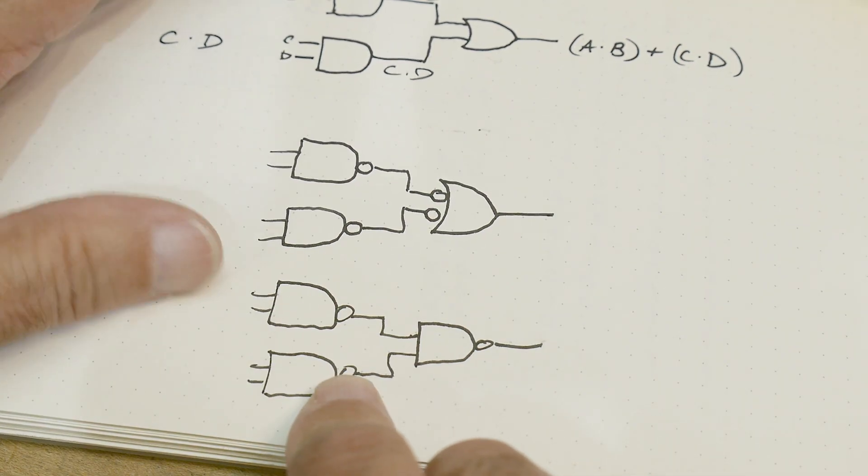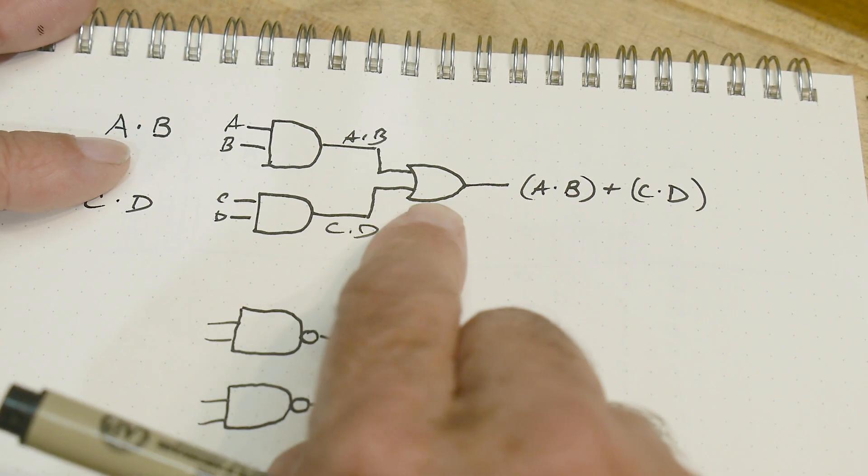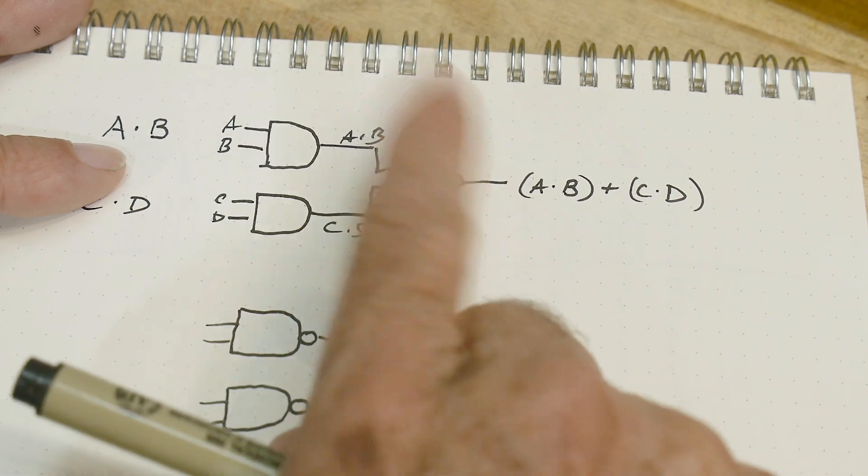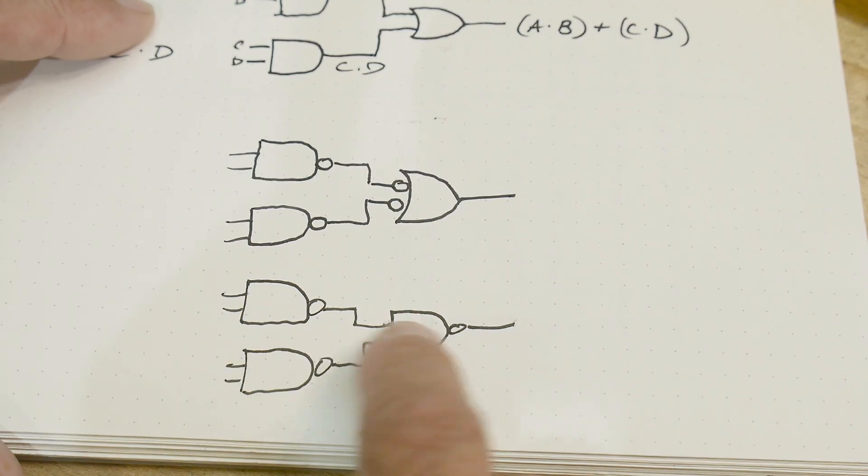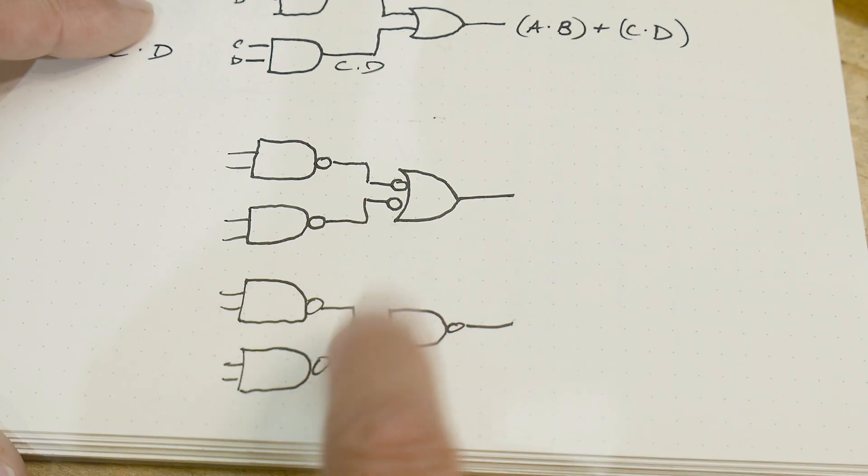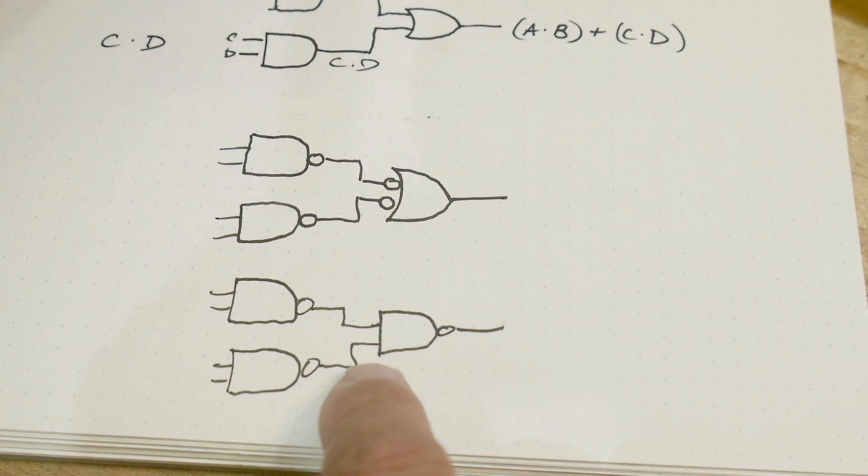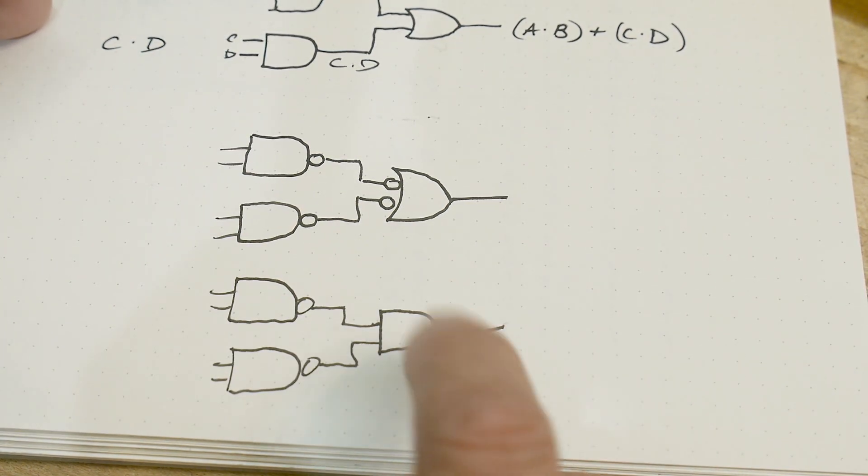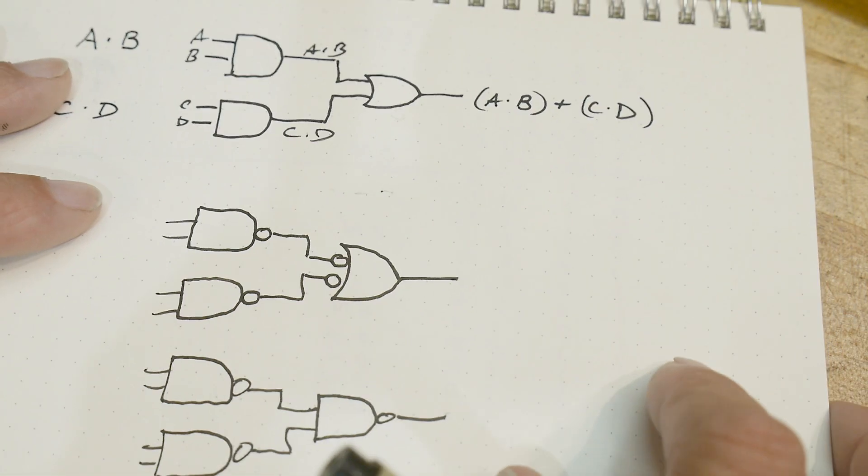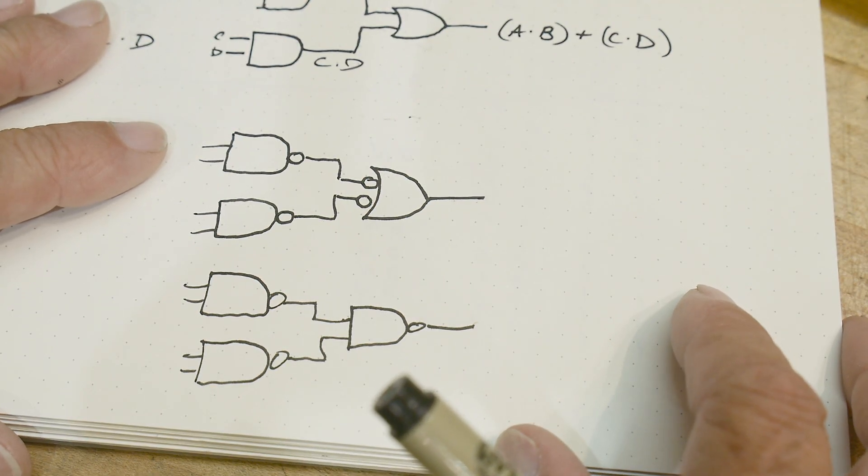So if you had one engineer that gave the boss this one, which would require two packages, and one that required only one package because it's a quad, the engineer would be, you know, pat on the back, get more money. He's a better engineer, right?